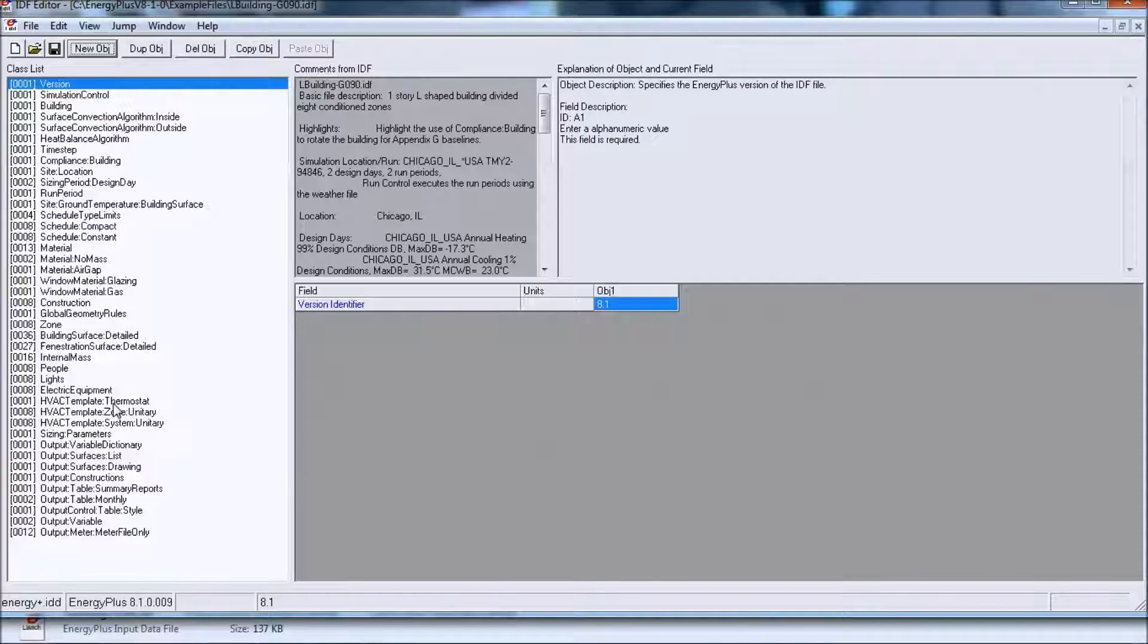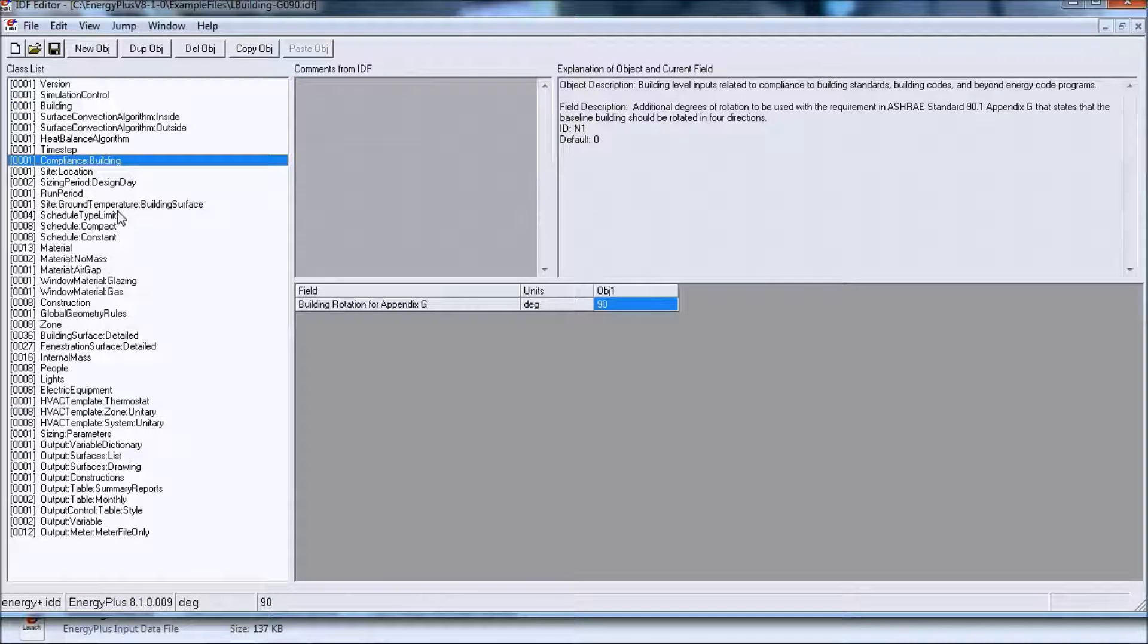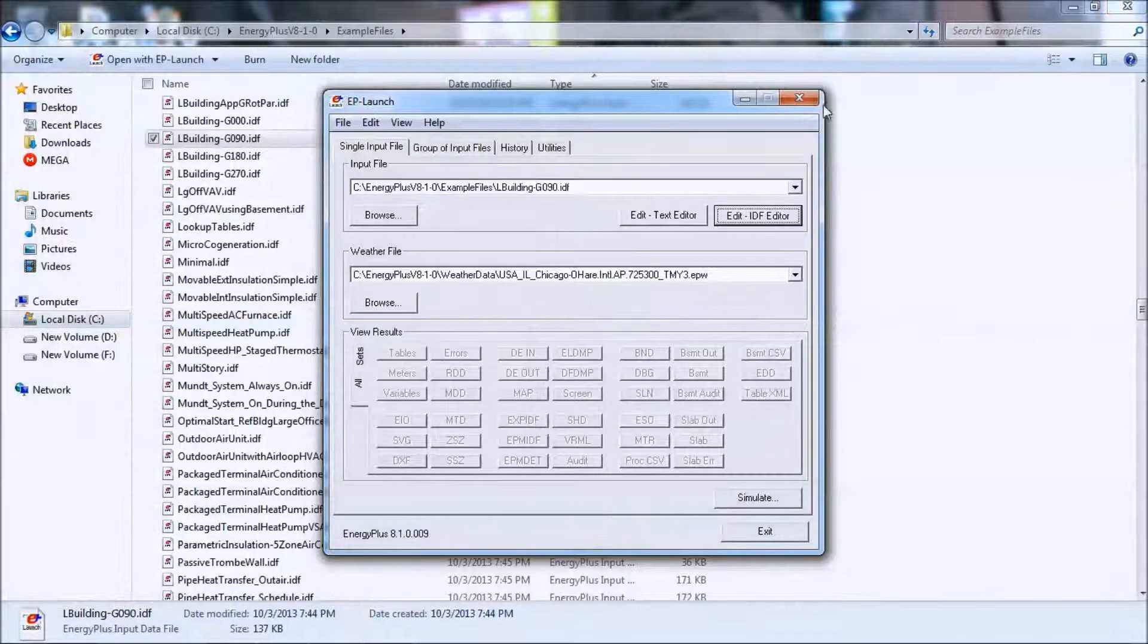This file initially had a HVAC template that had a unitary system. I removed these three objects and sizing parameters, and I also removed some of the initial objects. I renamed these zones - these zone names are really too big. Later on in the video you will see we'll be making nodes and branches, so if we use these zone names, the node names might become too large for us to handle. So I renamed these.